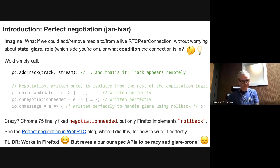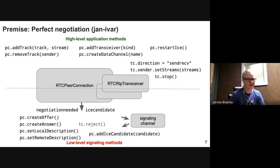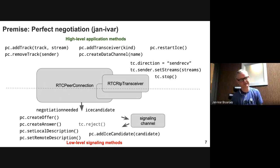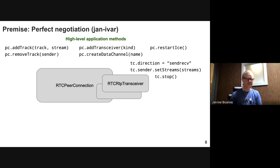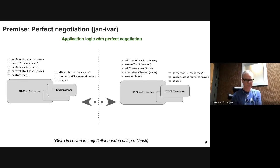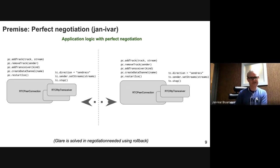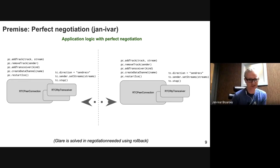Here's an illustration. The high-level application methods are on top: add track, create data channel, that kind of stuff, including transceiver methods like direction, set streams, and stop. Those are separate from the lower-level signaling methods that can all be abstracted away using events like negotiation needed and ICE candidate. Perfect negotiation really means having those negotiation methods written once, and then the application doesn't have to deal with it anymore. The application can now even manage a peer connection on either end using only these methods. Glare is solved in negotiation needed using rollback. That's the holy grail. That sort of works in Firefox now.